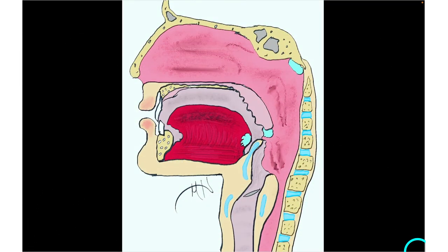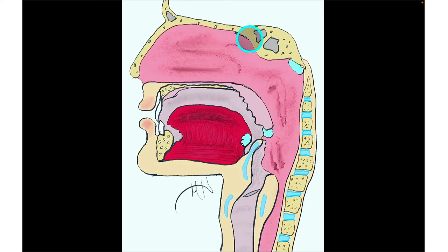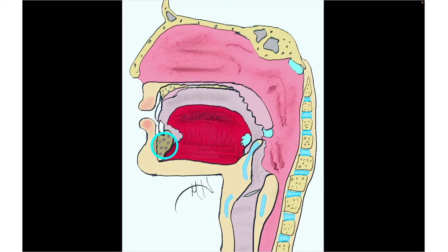What we see here is a sagittal section of the head. Up here would be the brain, but this is the bottom part of the skull — the bottom aspect of the frontal bone and the sphenoid bone. We can also identify the nasal cavity, oral cavity, lips, some teeth, and part of the mandible.